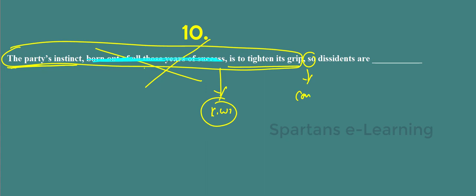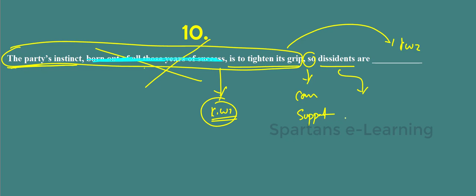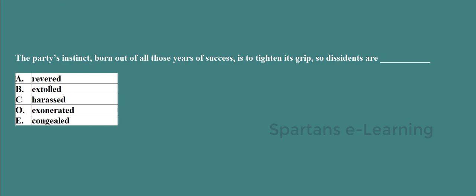'So' is a supporting connector, meaning keyword two carries the same sense as keyword one. Descendants are people opposing the party — dissenters. What will the party normally do with dissenters? It will crush them. Looking at options: 'revered' means respected — opposite, cancel. 'Extoll' means praised — opposite, cancel. 'Exonerated' means free from blame — irrelevant. 'Congealed' means to thicken — out of context. The only fitting answer is 'harassed.'